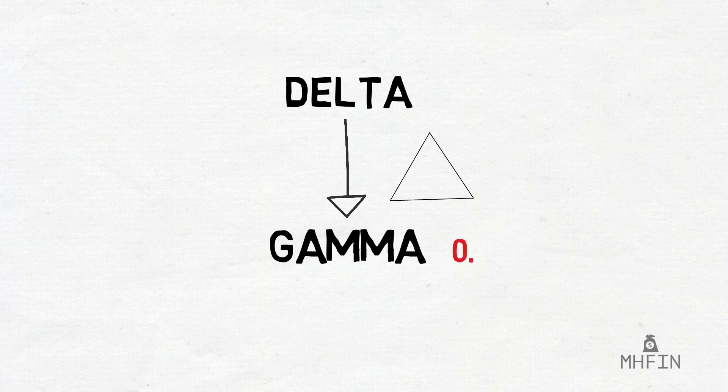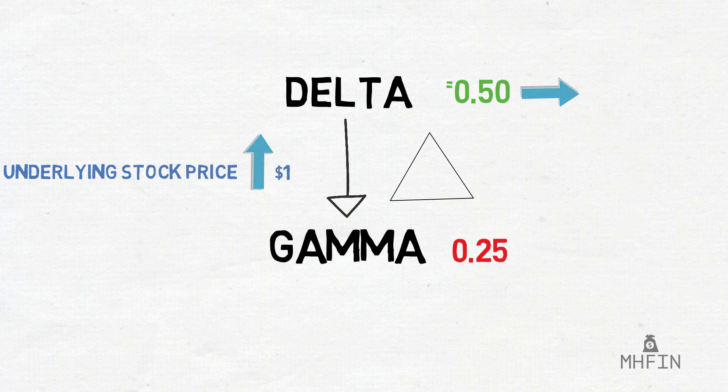As an example, if we pretend we have a call option whose gamma is 0.25, delta 0.50, and the underlying stock goes up $1, the delta value should go up to 0.75 given all other variables stay constant.